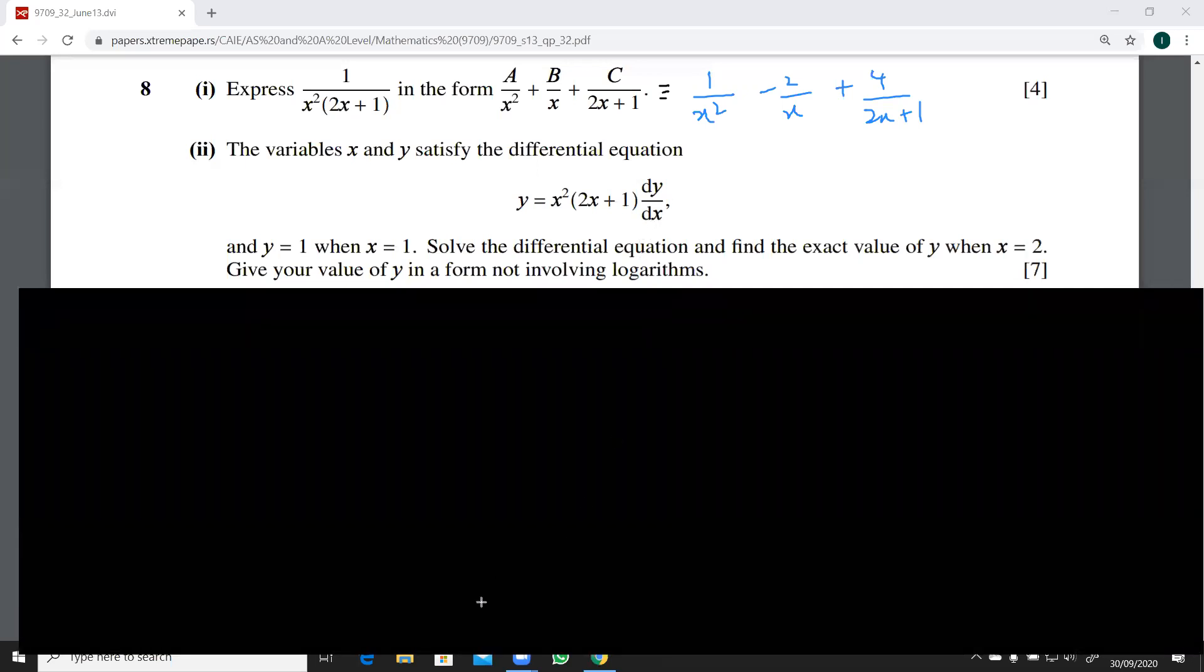The second part we have to solve this equation. So you can see that dx will be coming to this side. So you have dx over x squared into 2x plus 1, and this is dy over y. This is basically 1 over x squared into 2x plus 1 dx, and that is 1 over y dy.